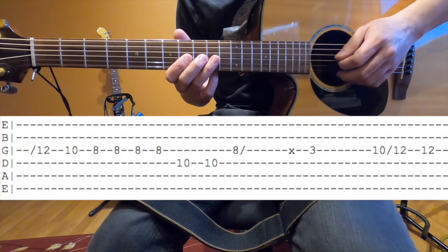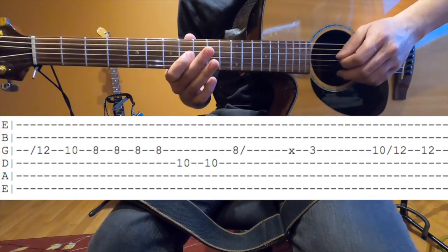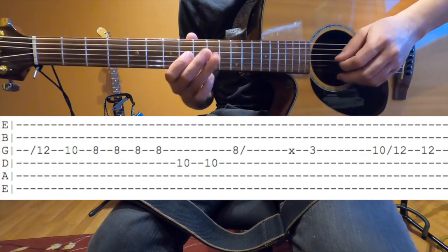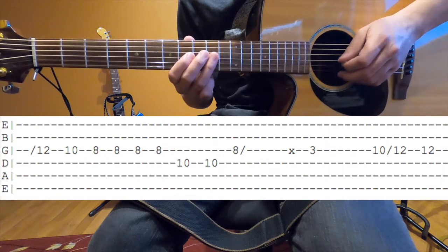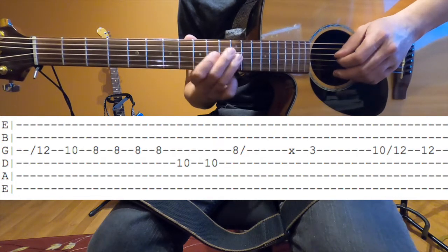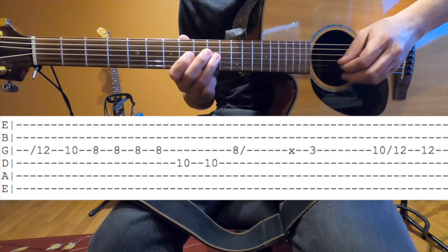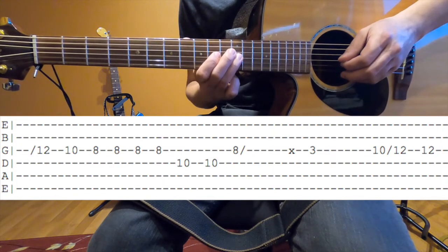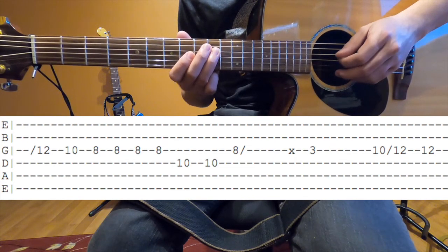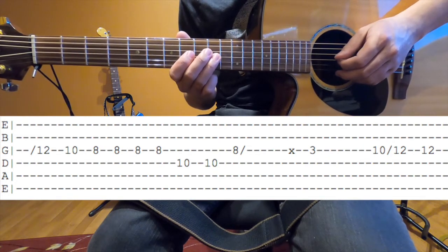The vocal melody starts on the G string, and it's a slide up to 12, 10, 8, 10 on the D string, 12 on the D string, 10 on the G string, 10 on the G string, and then it slides to 12 twice.